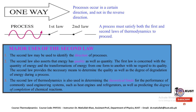The second law asserts that energy has quality as well as quantity. The first law is concerned with the quantity of energy and transformation of energy from one form to another, while no information is given regarding quality. The second law of thermodynamics provides means to determine the quality as well as the degree of degradation of energy during a process. Moreover, the second law is also used in determining the theoretical limits for the performance of commonly used engineering systems such as engines and refrigerators.